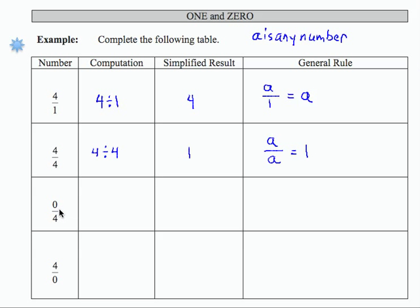If I have 0 divided by 4, my computation is written this way, and 0 parts of any number, there are 0.